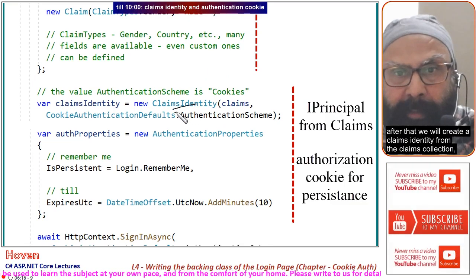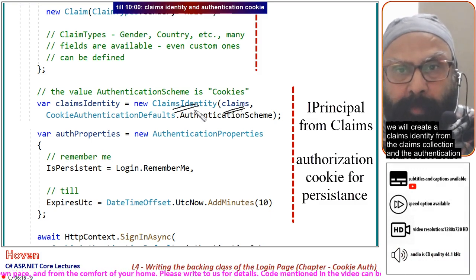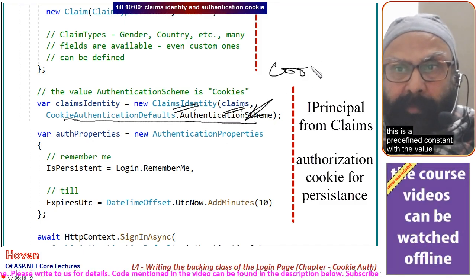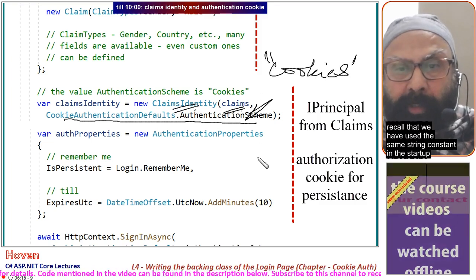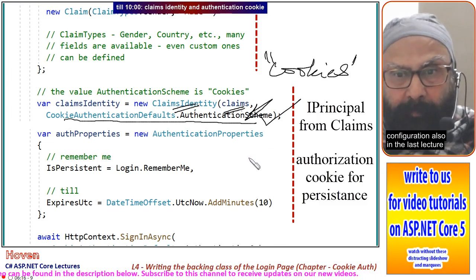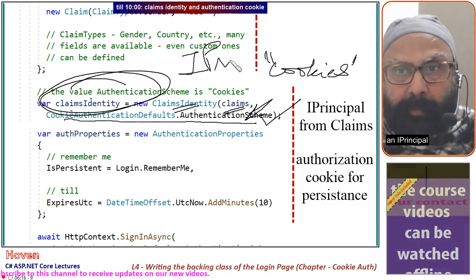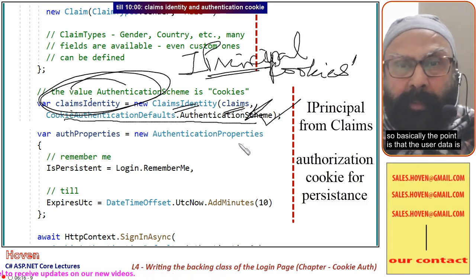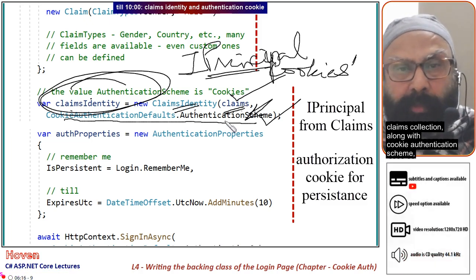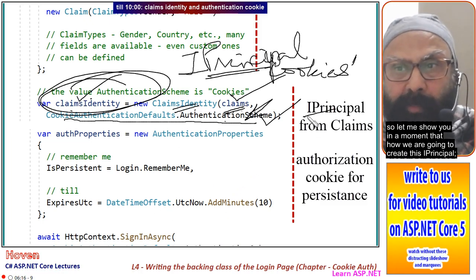After building the claims collection, we create a ClaimsIdentity from that collection along with the authentication scheme. This is the CookieAuthenticationDefaults.AuthenticationScheme — a predefined constant with the value "Cookies". Recall that we used the same string constant in the startup configuration in the last lecture. This ClaimsIdentity will next be used to create an IPrincipal.